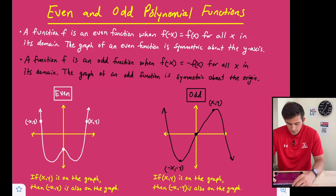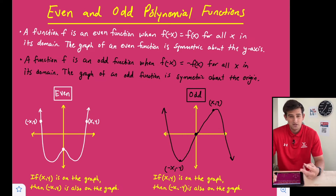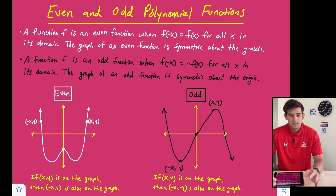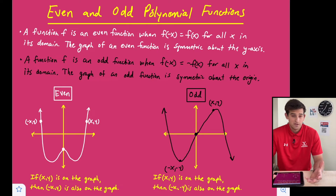A function f is an even function when f of negative x is equal to f of x for all x values in its domain. The graph of an even function is symmetric about the y-axis. There are two determining factors. If you want to do it algebraically, take your function f of x, plug in negative x instead of x, and simplify. If you get the exact same function that you started with, then it's an even function.